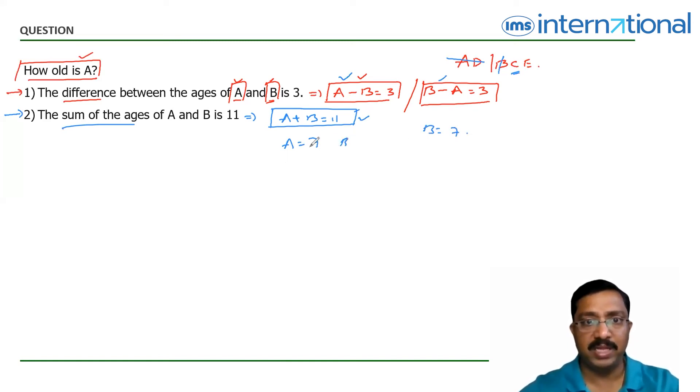If A is 7, then in this case, B value will be 4. If B is 7, then A value will be 4 over here. So you don't have a definite answer to A. So is the reason C is gone and E must be the answer to this question.